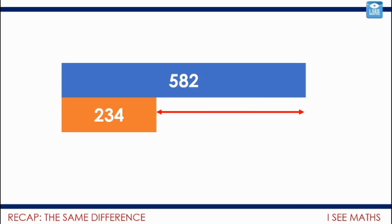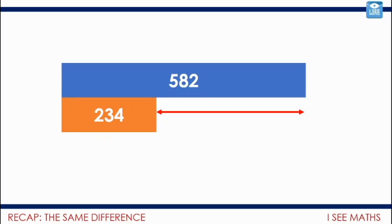So 582 subtract 234 — to find the difference between 582 and 234. I think I can adjust those numbers to make this calculation slightly easier. What I'm going to do is subtract 3 from both numbers. I can do this subtraction instead and the answer will be the same. Here I can just subtract all the hundreds, tens, and ones from each other and there's no regrouping involved.